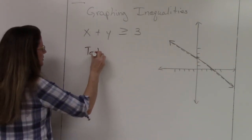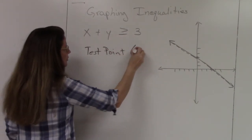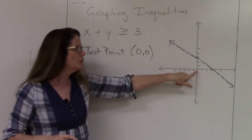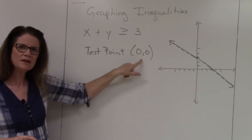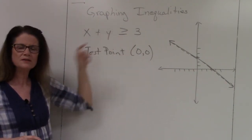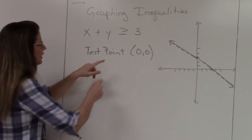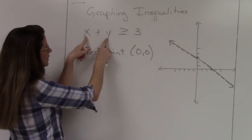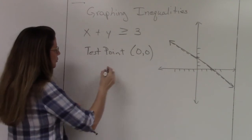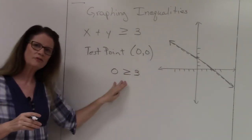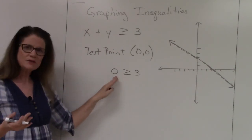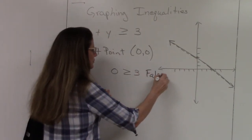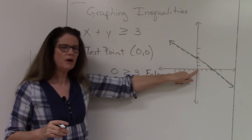The way you identify the solution side is by using a test point. Use the easiest test point: (0, 0). That point is at the origin on the graph. Plug x equals 0 and y equals 0 into your inequality: 0 plus 0 is greater than or equal to 3, which gives you 0 is greater than or equal to 3. That is a false statement — 0 is not greater than or equal to 3.